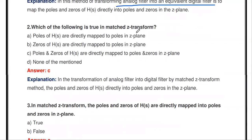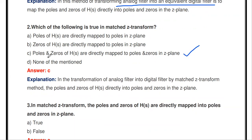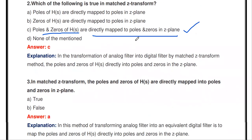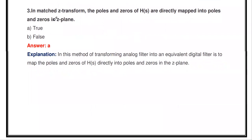Which of the following is true in matched Z-transform? Options: poles of H(s) are directly mapped to poles in Z-plane; zeros of H(s) are directly mapped to poles in Z-plane; zeros of H(s) are directly mapped to poles and zeros in Z-plane. The correct answer is that in matched Z-transform, zeros of H(s) are directly mapped to poles and zeros in Z-plane. In matched Z-transform, the poles and zeros of H(s) are directly mapped to poles and zeros in the Z-plane — true.